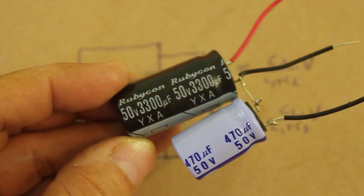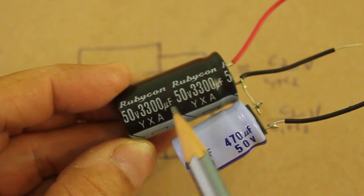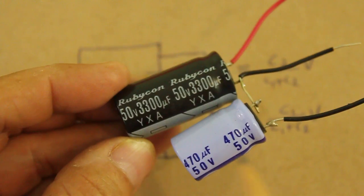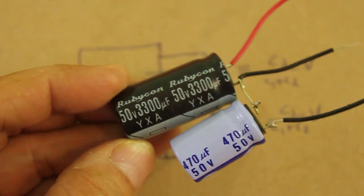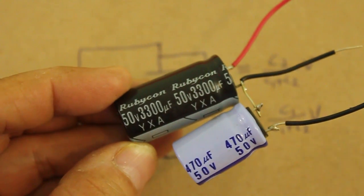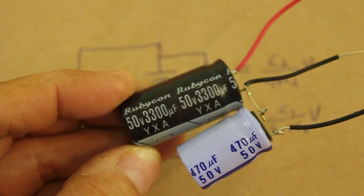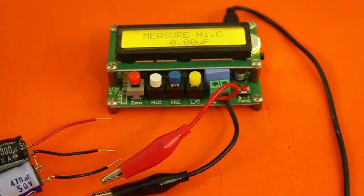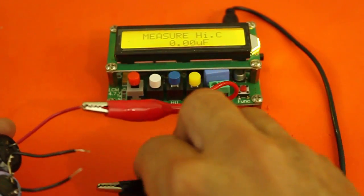Let's make the test with these two capacitors, one of 3300 microfarads and the other 470 microfarads. However, let's measure the capacitances directly since, as we know, electrolytic capacitors have large tolerances. Let's see the first capacitor, 3300 microfarads.